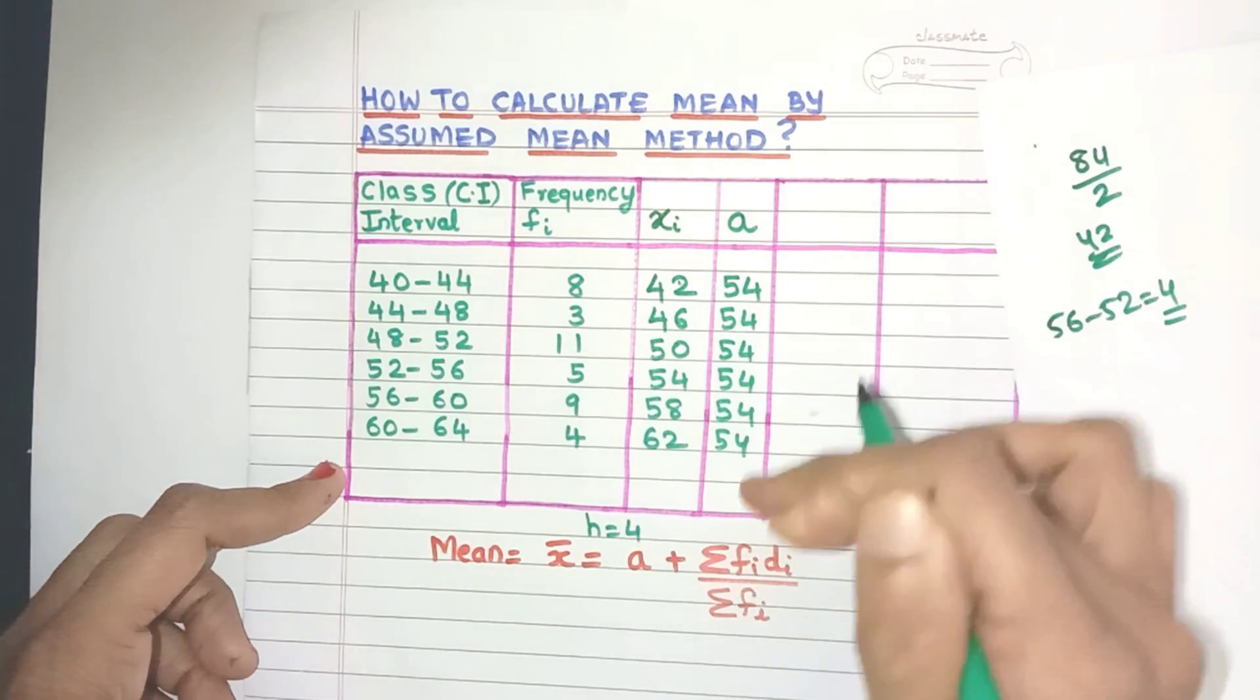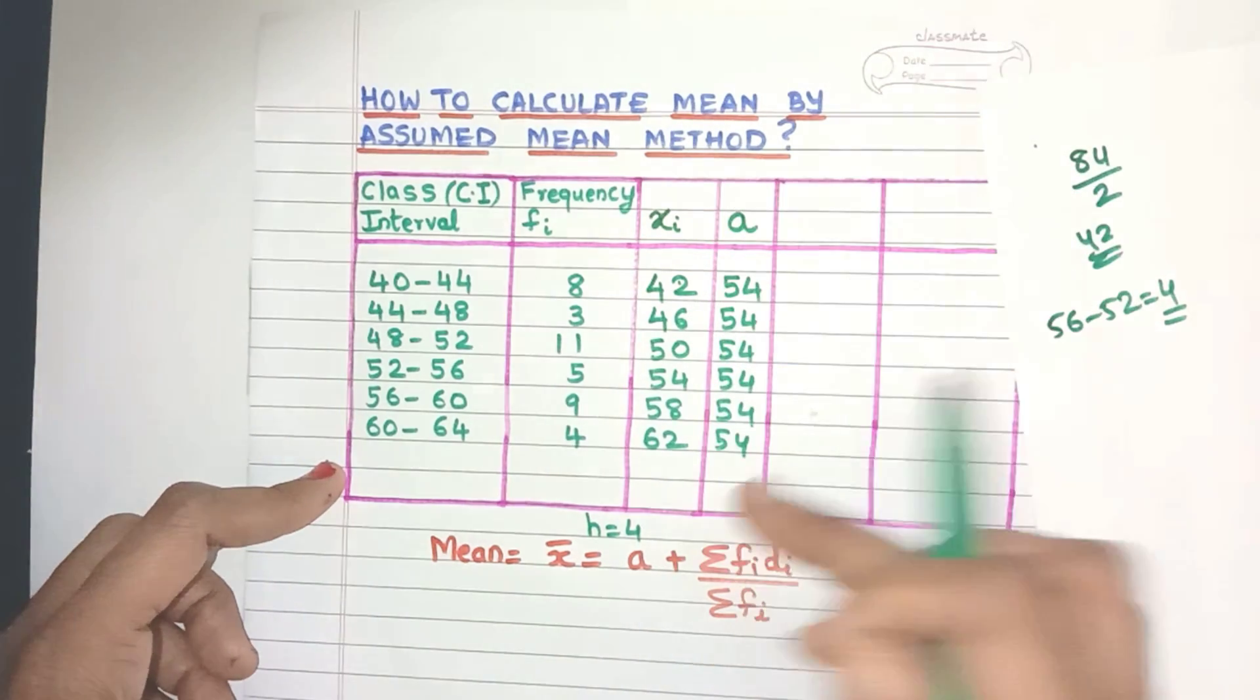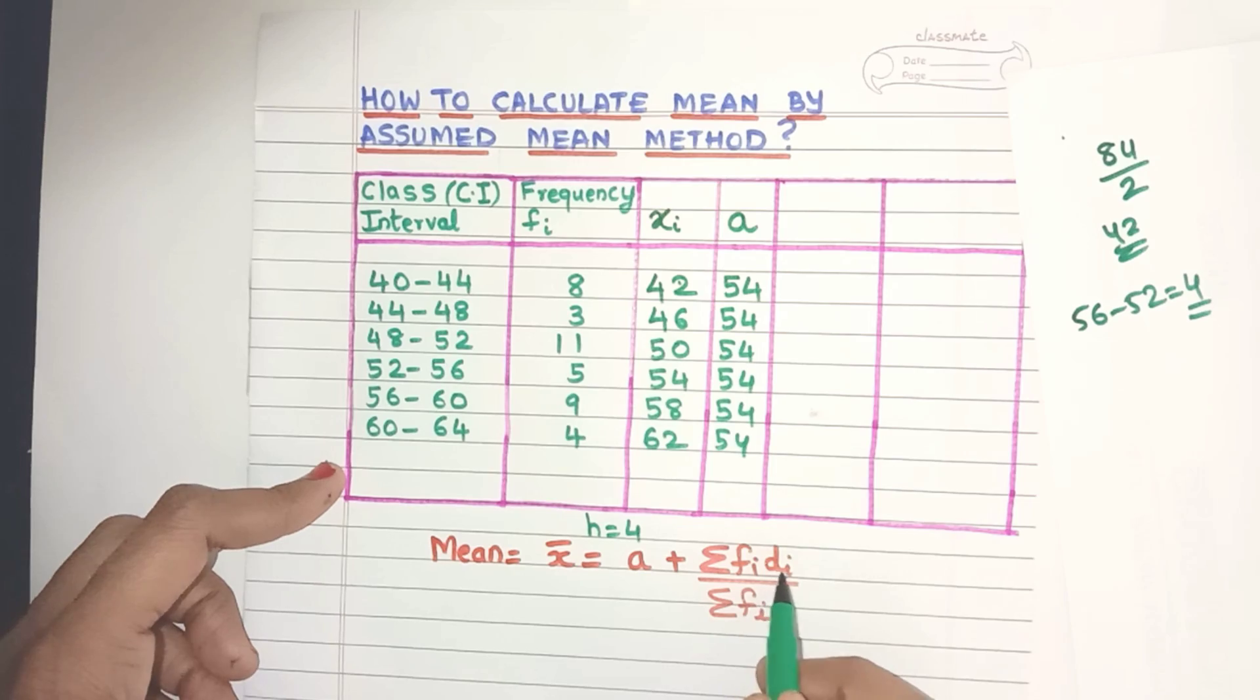So let me write the A value everywhere over here. So this extra column is for my own convenience so that I don't make any mistakes. If you want, you can omit this column also. Now just see the formula. We have a DI.